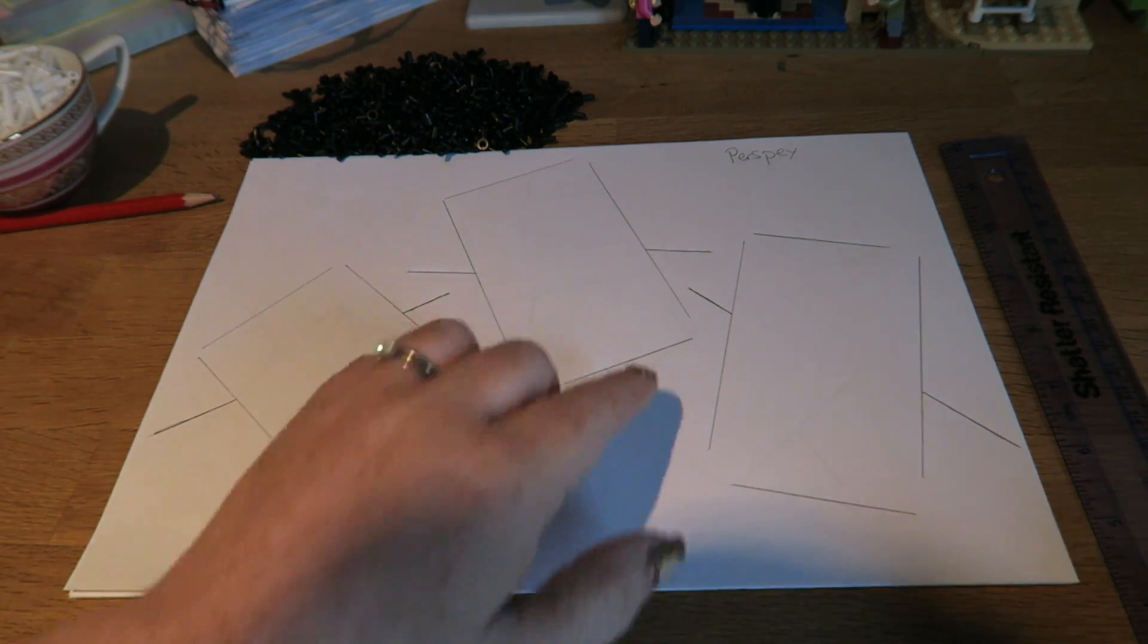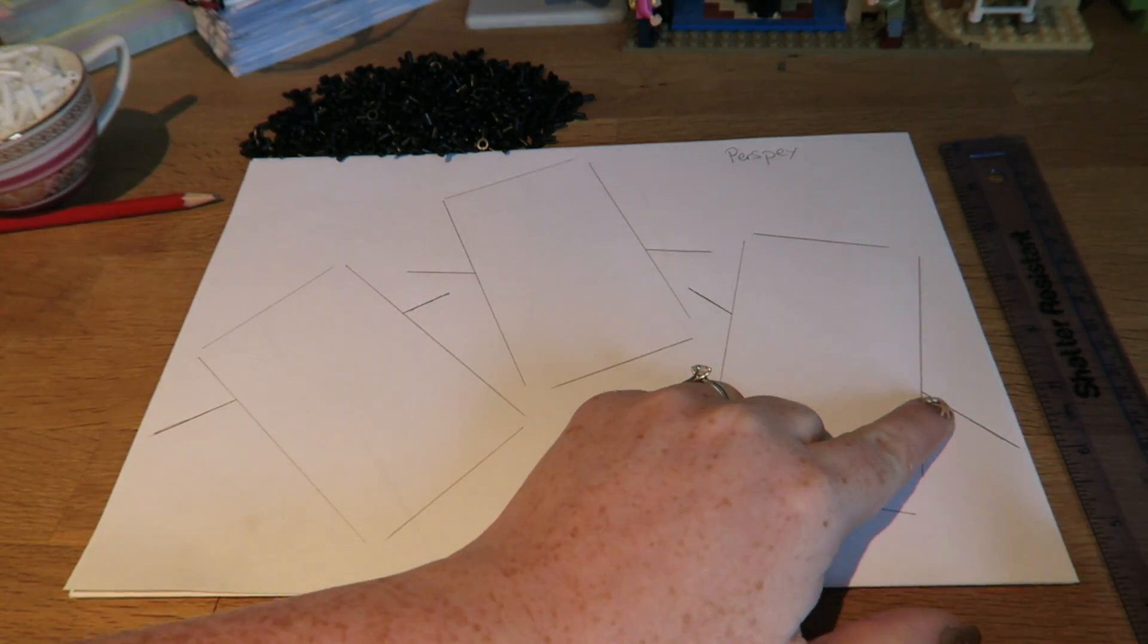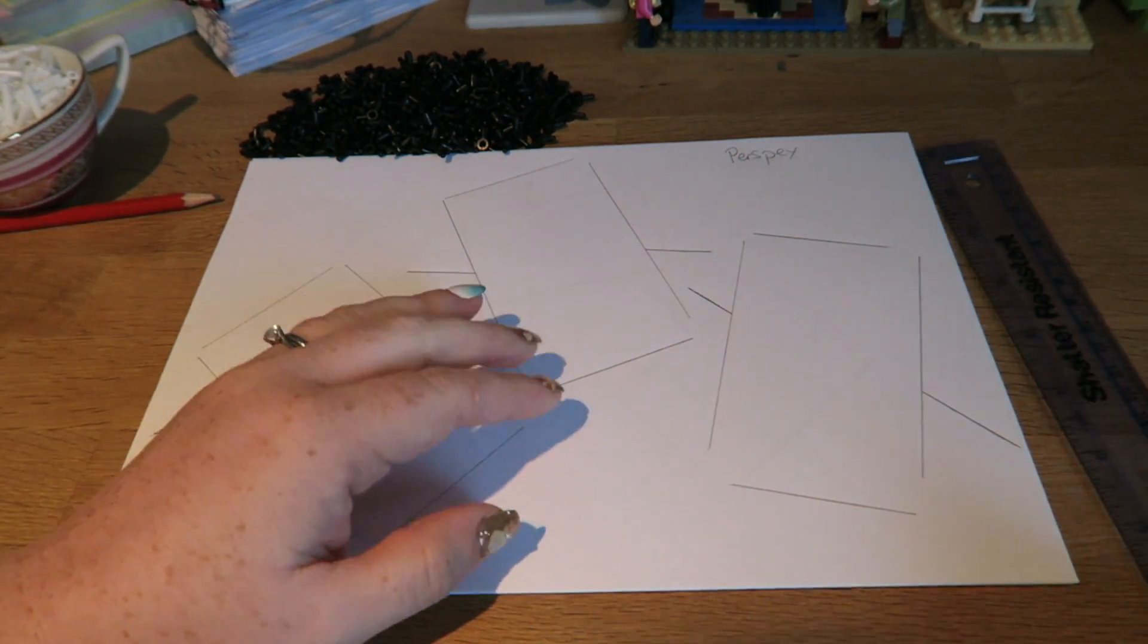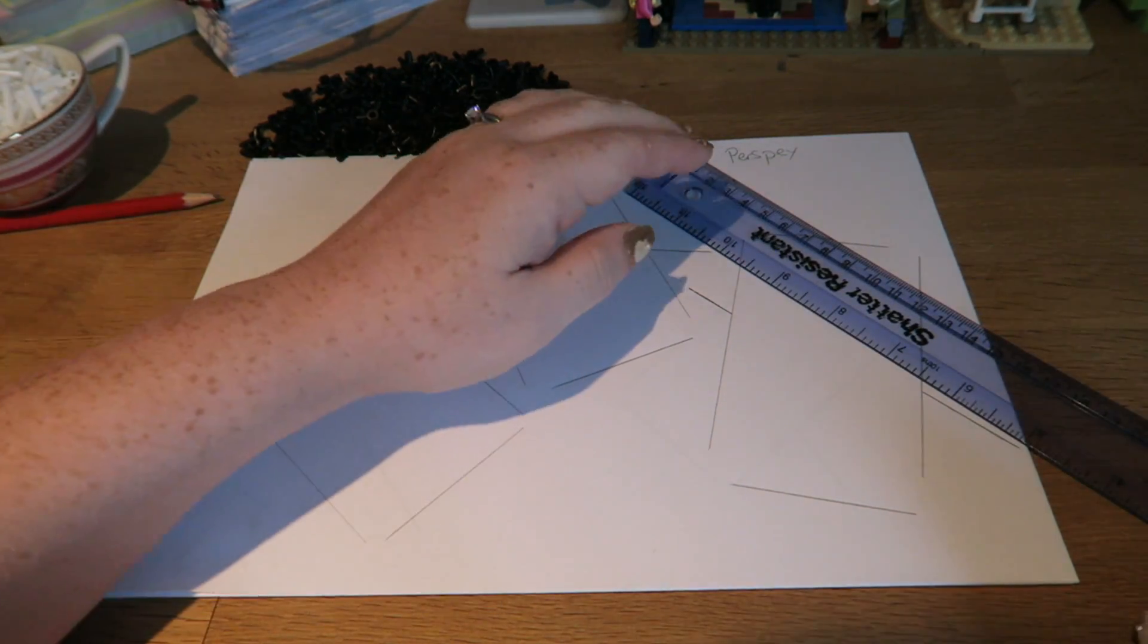So now we've finished with the ray box, and what I've done is I've drawn, using my pencil and ruler, nice straight lines where the light goes in and the light goes out.